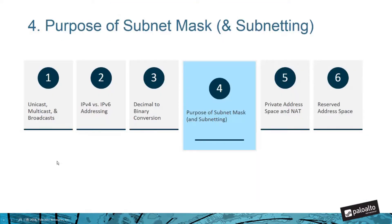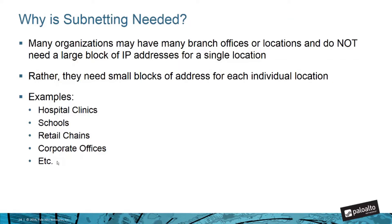The next section here is looking at the purpose of a subnet mask, or what we would call subnetting, creating subnets. So why is subnetting needed? Many organizations have different branch offices, different locations, and they might not need a large block of addresses for a single location. Instead, they might need small blocks of addresses for each individual location. For example, hospitals that have clinics scattered around the city, or schools within a school district, different kinds of retail chains and outlets. If you had a mall that had different stores in different locations or different restaurants in different parts of the city or across the country, they might want to have an address range for each location. Corporate offices as well, are also areas where we could have different branch locations. And there's probably a lot of other examples as well.